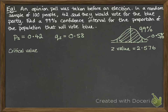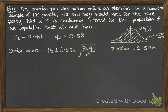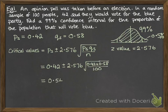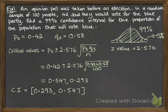So our critical values for working out our confidence interval look like this: it's our PS plus or minus 2.576 times the square root of the variance. Now putting in the numbers that we know and working that out, you get two values, and we can put that into our confidence interval.